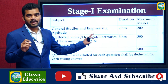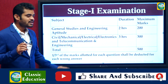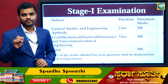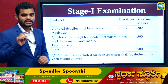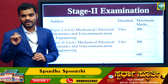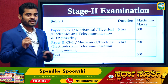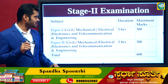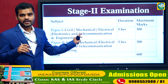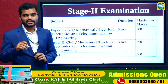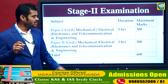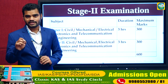The Prelims is objective type. The maximum marks for Paper 1 is 200 marks. There is negative marking — one-third marks are deducted per wrong answer. In the Mains Examination, there are two papers (Paper 1 and Paper 2) for your chosen branch, each of 3-hour duration with maximum 300 marks each. The Mains is a descriptive paper.